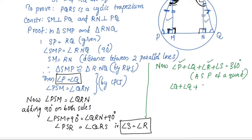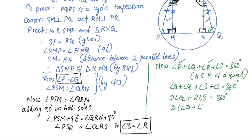I will substitute S in the opposite angle. We have 2Q and 2S. Angle S plus angle S is equal to 360 degrees, so 2 angle Q plus 2 angle S equals 360 degrees. Therefore, angle Q plus angle S equals 360 divided by 2, which equals 180 degrees.